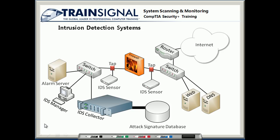Now let's take a look at the difference between a reactive and a passive intrusion detection system. In a passive system, let's say your network is under attack. The attack comes in, your IDS sensors pick up those packets and send them to the collector. The collector compares that against the attack signature database, realizes this is an attack, and sends that information to the alarm server, which alerts you to the fact that there's an attack on the network. However, that's where the intrusion detection system ends — it doesn't do anything else other than alert you. That is a passive intrusion detection system.